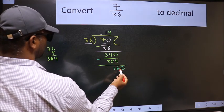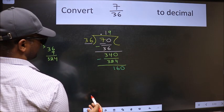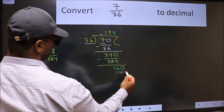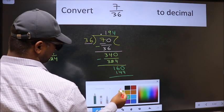So 160. A number close to 160 in 36 table is 36 times 4, 144. Now we should subtract.